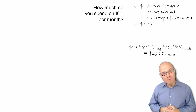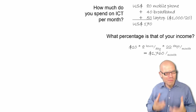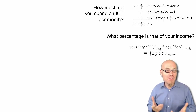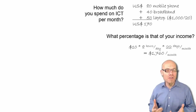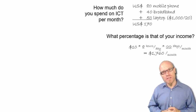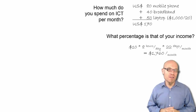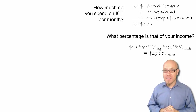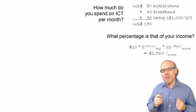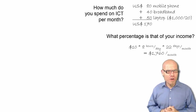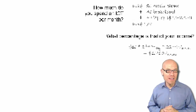So what percentage is that of your income? If you work at minimum wage — around $1,700–$1,800 per month — $170 is about 10%. And that's also in agreement with global statistics: worldwide, people spend between 5% and 10% of their income on ICT. So now, is $100 a good price for an ICT access solution for everybody worldwide?